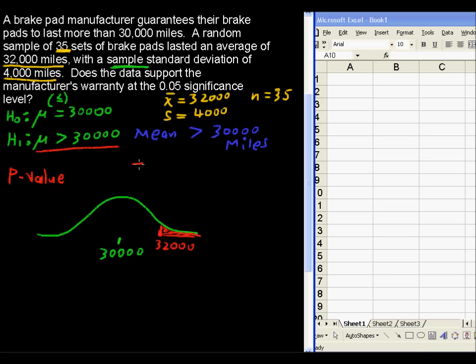So the tdist function is what you're going to use to find this area, which is the p-value. And it's the t-dist, they use x, I'm going to write t just so we don't confuse x with some other variable. So t, and then the degrees of freedom you put in there, and then you put in number of tails.